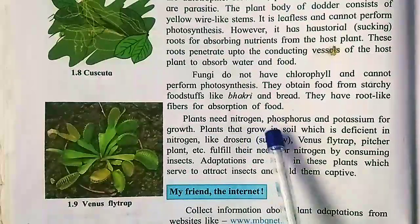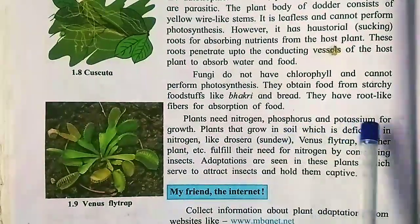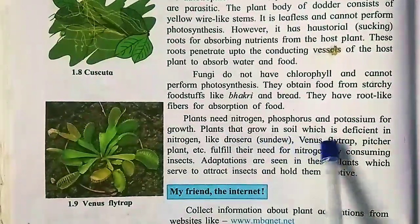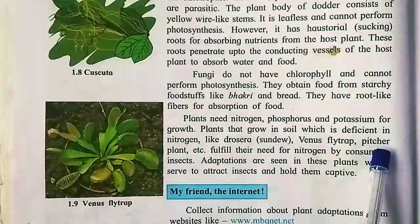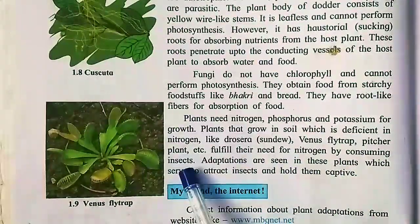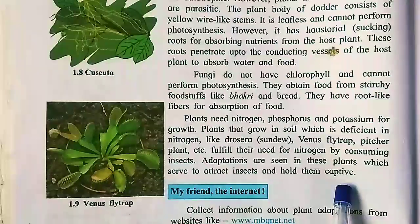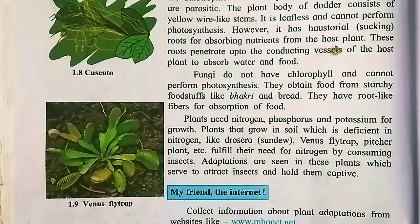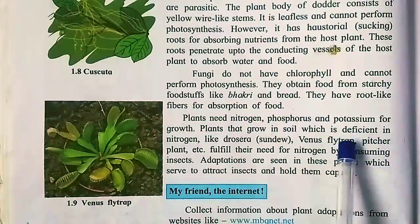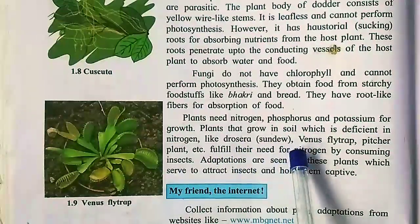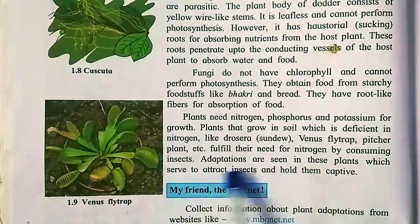Plants need nitrogen, phosphorus, and potassium for growth. Plants that grow in soil which is deficient in nitrogen — like Drosera, Venus flytrap, pitcher plant, etc. — fulfill their need for nitrogen by consuming insects. Adaptations are seen in these plants which serve to attract insects and hold them in a cavity. These plants take nitrogen from the insects' bodies.